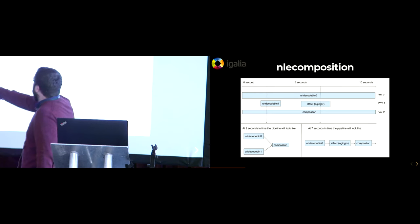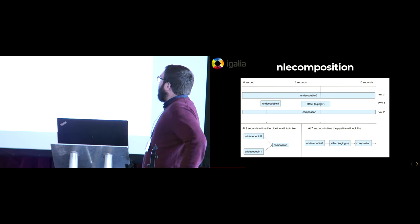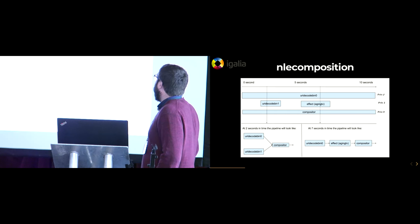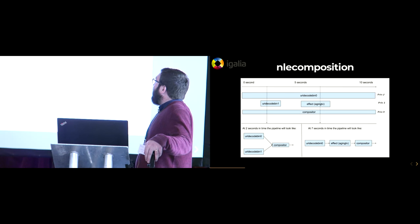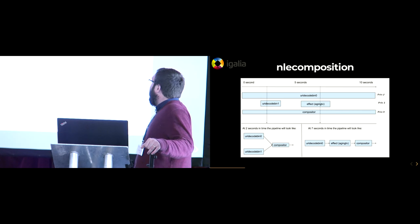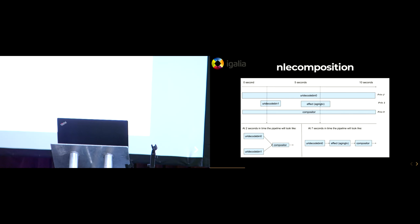That object has been set to start around one second and be present inside the composition for two seconds. Then here we have a compositor, which is basically the main mixer in the NLE composition. That one is expandable, meaning it will last for the whole duration of the composition. NLE composition will pick elements from lowest priority, which is two, to highest priority, which is zero, and build the pipeline. So it will go and pick up the UI decode bin zero element, then UI decode bin one, and plug it into the compositor.